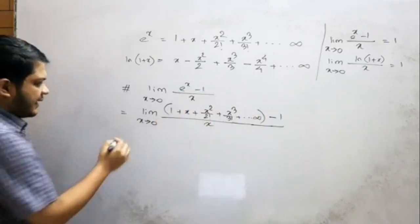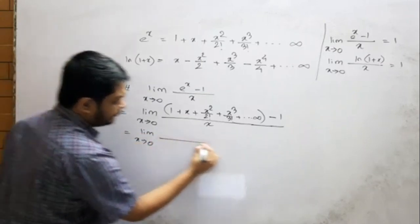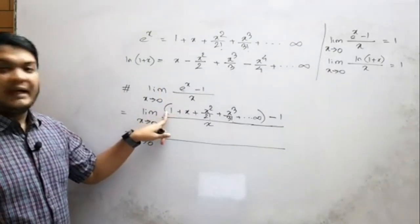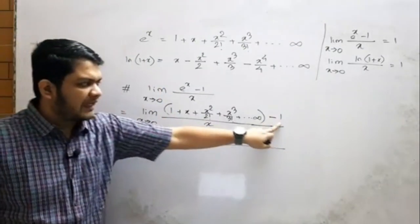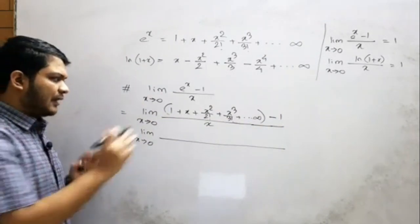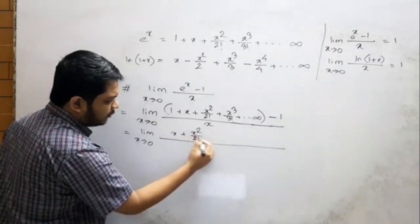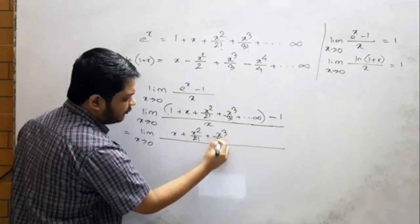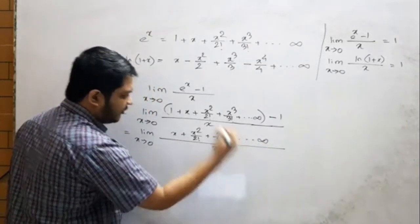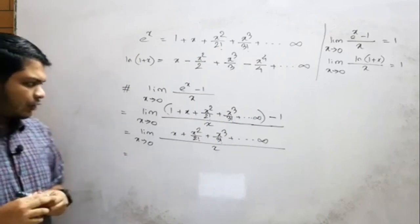So we have to write: limit x tends to 0. Since we have 1 here, minus 1 cancels out. So we have x plus x squared by 2 factorial, plus x cubed by 3 factorial, and so on to infinity, divided by x.